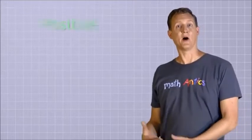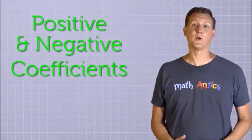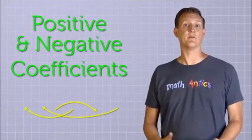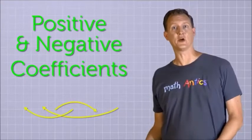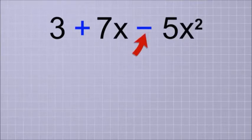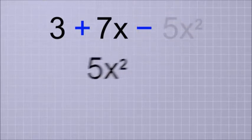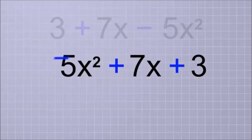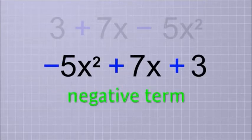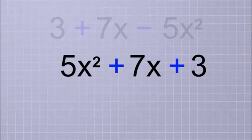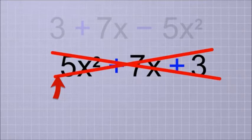And recognizing positive and negative coefficients helps us a lot when rearranging polynomials that have a mixture of positive and negative terms, like our example here. If you think of the negative sign in front of the 5x squared term as part of its coefficient, then you'll realize that when we move it to the front of the polynomial, the negative sign has to come with it. It has to come with it because it's really a negative term. If we don't bring the negative sign along with it, we'll be changing it into a positive term, which would actually change the value of the polynomial.